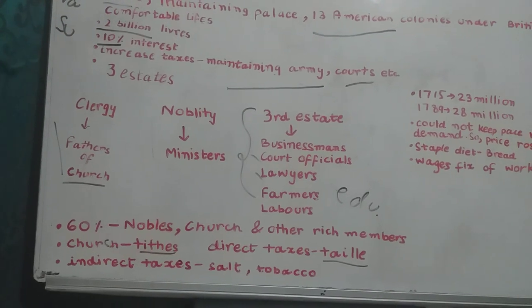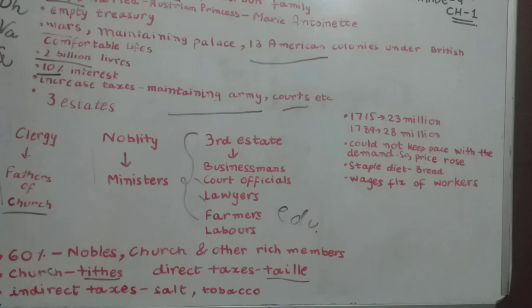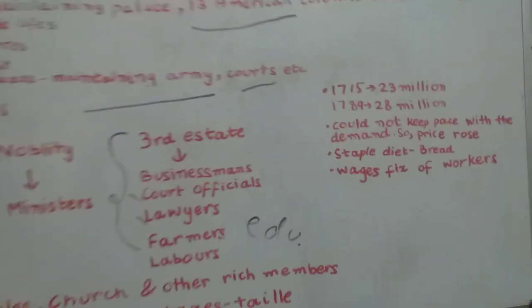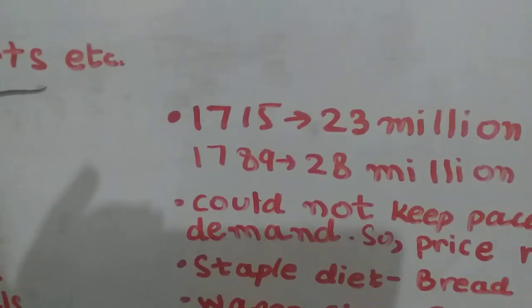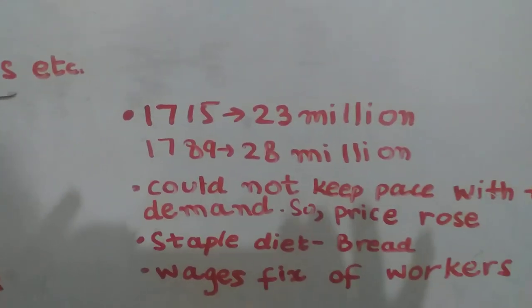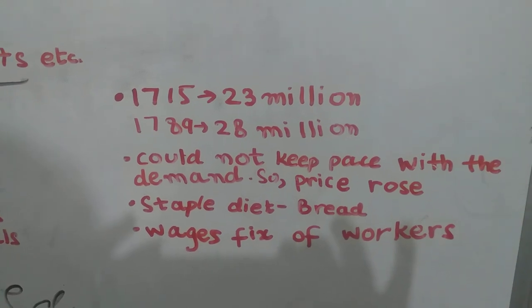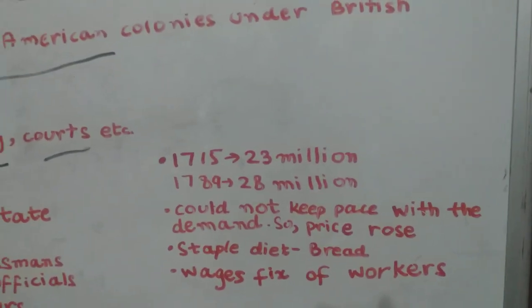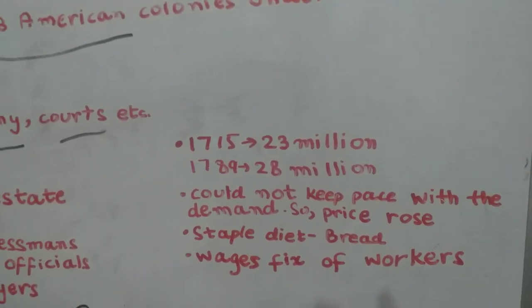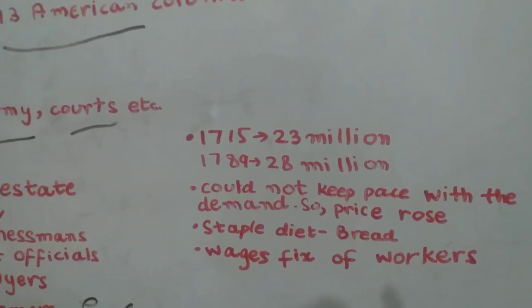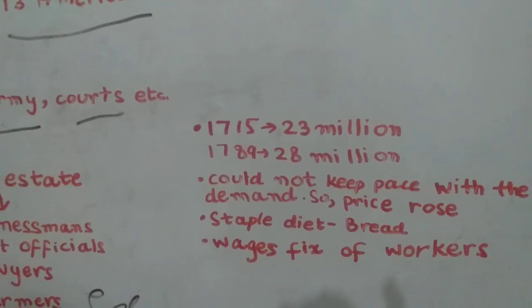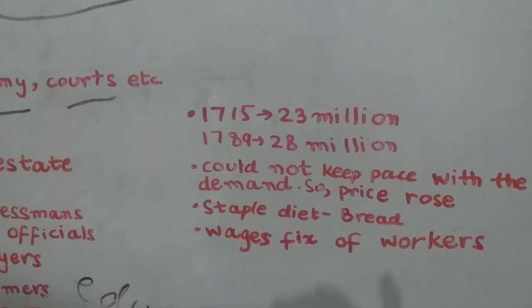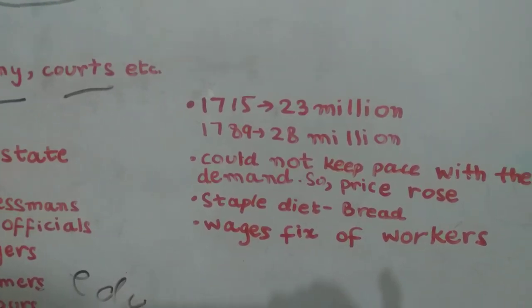In 1715, the population of France was 23 million, and by 1789 it had risen to 28 million. This rise in population caused demand to increase — demand for goods, food, and all basic necessities. But the production in France was not sufficient to meet this demand, so prices increased.